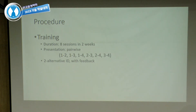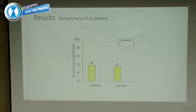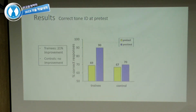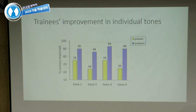Following — and preceding — training, participants did a tone identification task: they heard a tone and had to say which of the four tones they thought it was. At pre-test, trainees and controls performed similarly, at about 68–69% correct. After training, our trainees showed a remarkable improvement in tone identification while controls showed none. This is actually quite a large effect — larger than what is typically found in the segmental literature on the R-L distinction. Each of the four tones showed a significant improvement as a result of training.